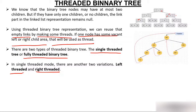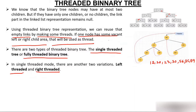The in-order traversal of this tree is: 12, 20, 23, 30, 56, 85, 89. In a left threaded tree, only nodes whose left pointer is empty will keep the information of their in-order predecessor. For node 30, both pointers are empty. In in-order, the predecessor of 30 is 23, so node 30 will keep the information of 23.